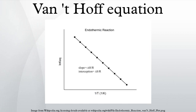By measuring the equilibrium constant K at different temperatures, the Van't Hoff plot can be used to assess a reaction when temperature changes. Knowing the slope and intercept from the Van't Hoff plot, the enthalpy and entropy of a reaction can be easily obtained. The Van't Hoff plot can be used to quickly determine the enthalpy of a chemical reaction both qualitatively and quantitatively. The change in enthalpy can be positive or negative, leading to two major forms of the Van't Hoff plot.